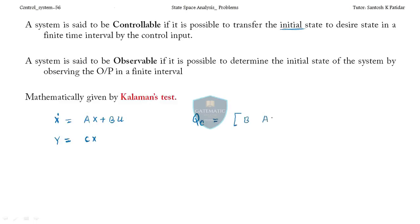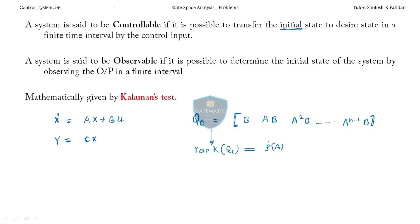For controllability, form the matrix Qc = [B, AB, A²B, ..., A^(n-1)B]. Find the determinant and rank of Qc. If the rank of Qc equals the rank of A, and the determinant of Qc is not equal to zero, then the system is controllable.